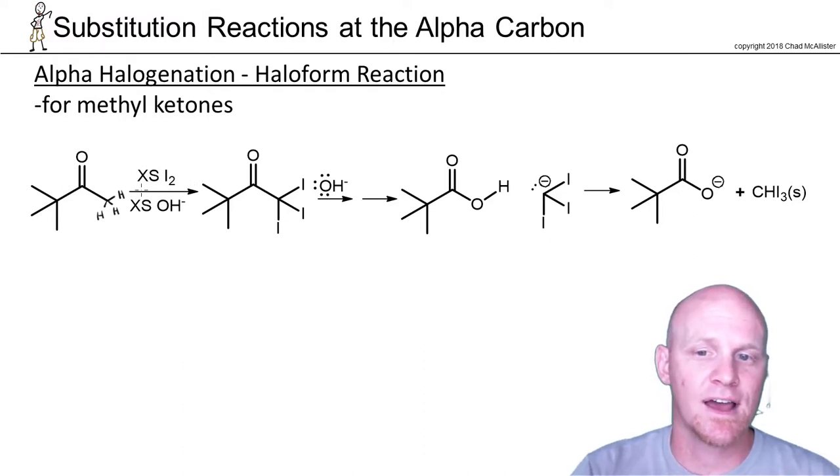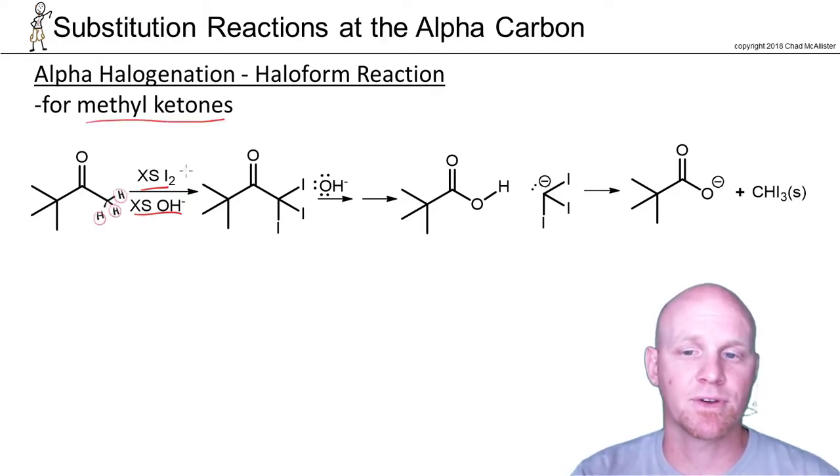We're going to have excess I2 and excess base, and every single one of these alpha hydrogens on a methyl ketone, specific for methyl ketones, is going to get replaced by an iodine. So that's the first part of this.